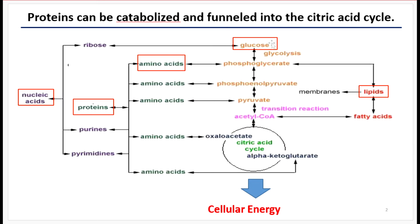Central metabolism would be glycolysis, which is pictured here in orange, the transition reaction when we turn pyruvate into acetyl-CoA, and the citric acid cycle, which is pictured here in green. These all generate cellular energy through the reduction of electron carriers — NAD to NADH, or FAD to FADH2. What powers both of these pathways is the entrance of glucose into the cell, which is then phosphorylated through glycolysis and allowed to proceed through central metabolism.